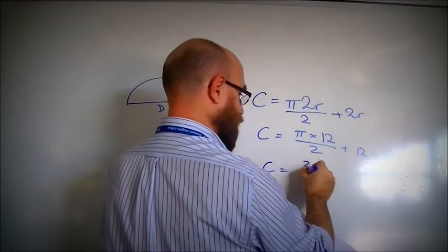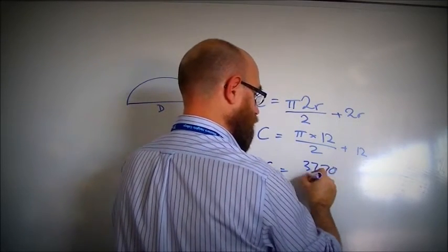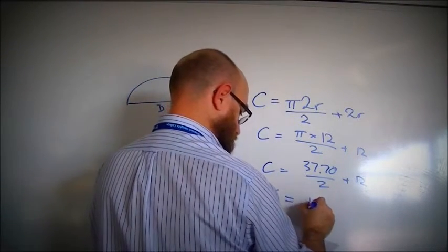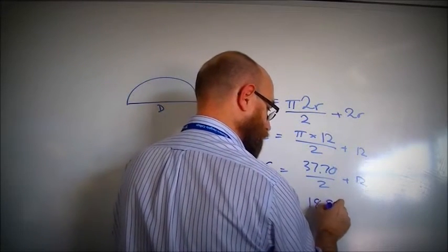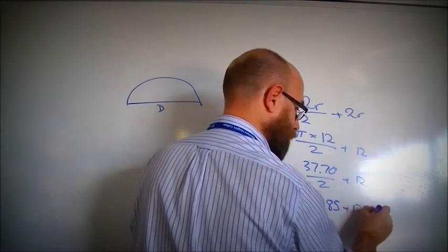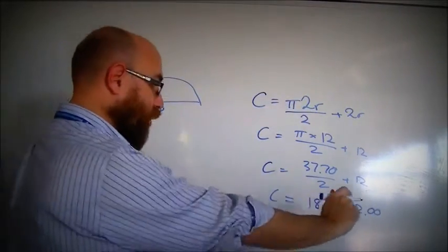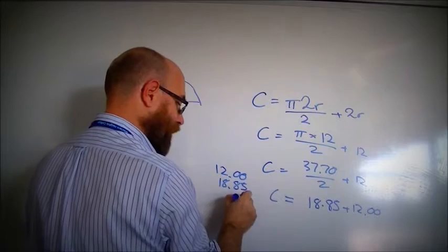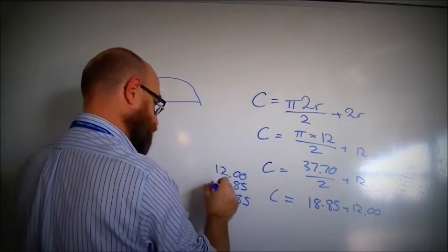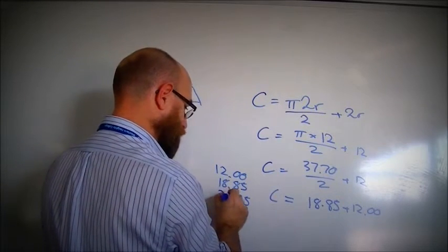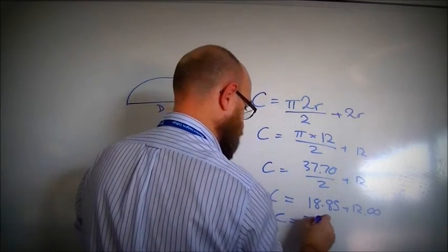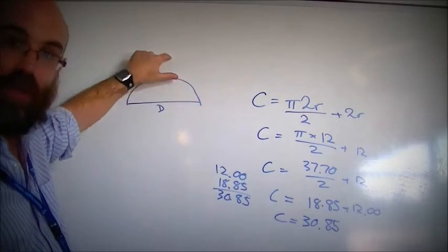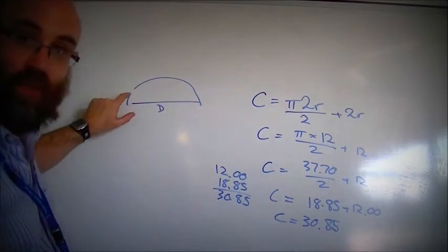37.70 divided by 2, plus 12. Half of that is 18.85, plus 12. So over here I'm going to do a little bit of working: 12 plus 18.85, the 85 comes straight down, that gives me 30. My total answer of that circumference is 30.85, and I built it using half of the equation for the circumference of an entire circle, plus that shape there.